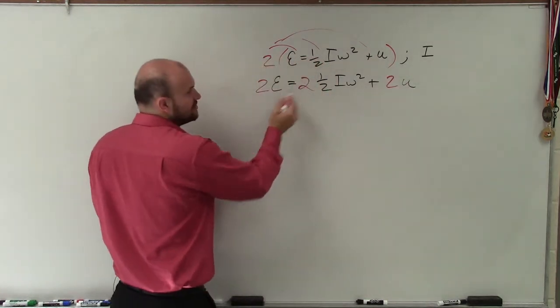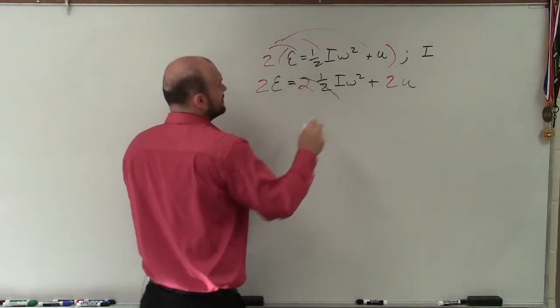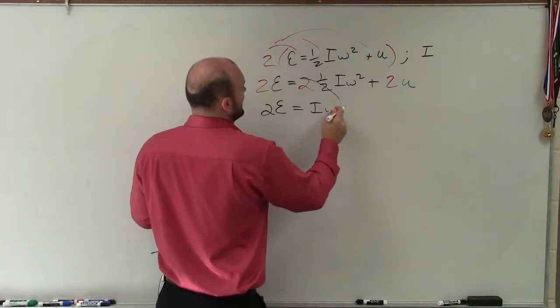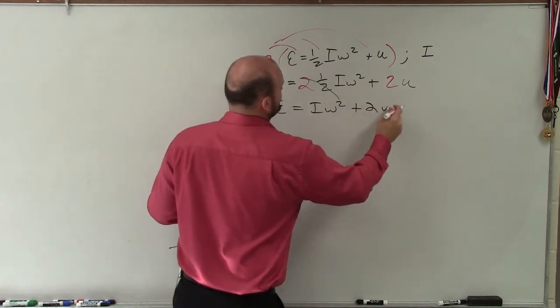Obviously, you can see that 2 times 1/2 equals 1, and I'm just left with 2E = Iω² + 2u.